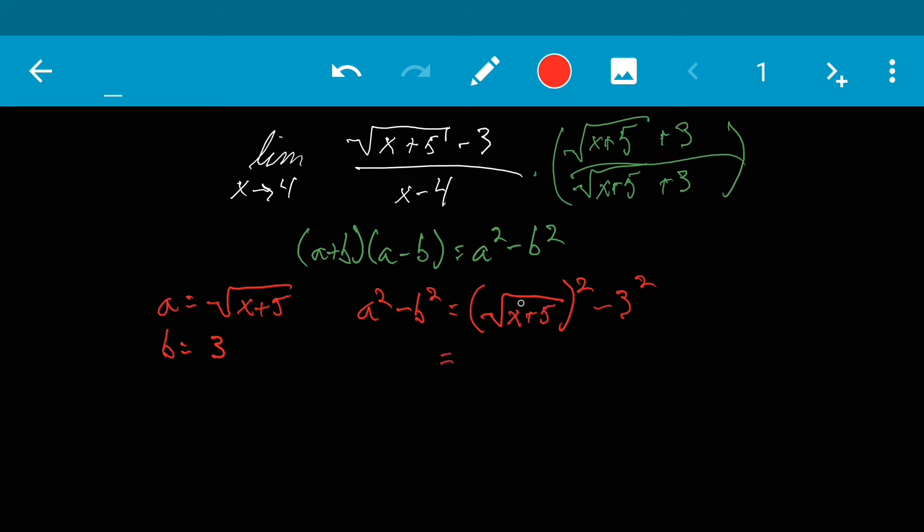So anything that's a square root to the square is going to give you what's inside the square root symbol. So that's just x plus 5 minus, well 3 squared is 9, which now we have x minus 4.